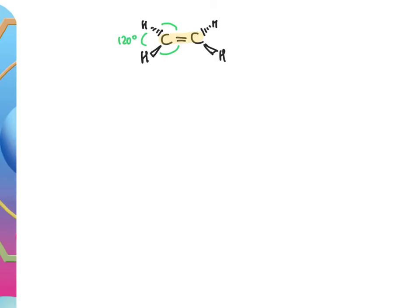With three bonding pairs and no lone pairs, you get a trigonal planar shape. All bond angles are 120 degrees and the molecule is flat — planar. If we drew the molecule from above, it would look like our normal displayed formulae, with 120-degree bond angles split three ways.